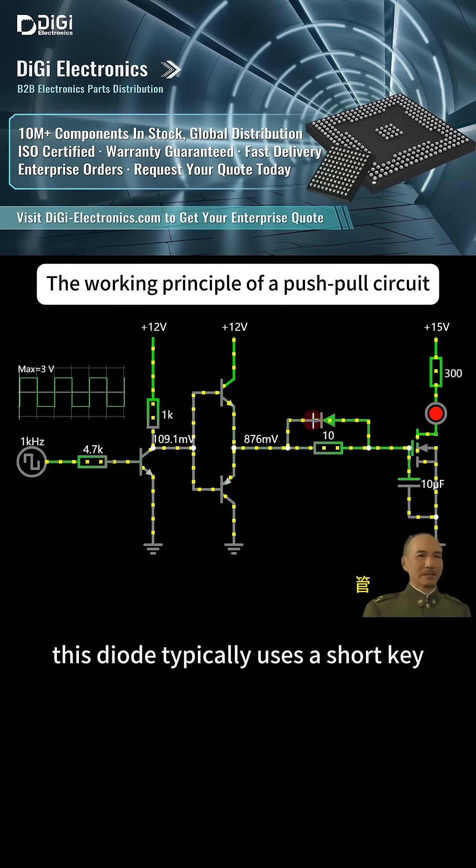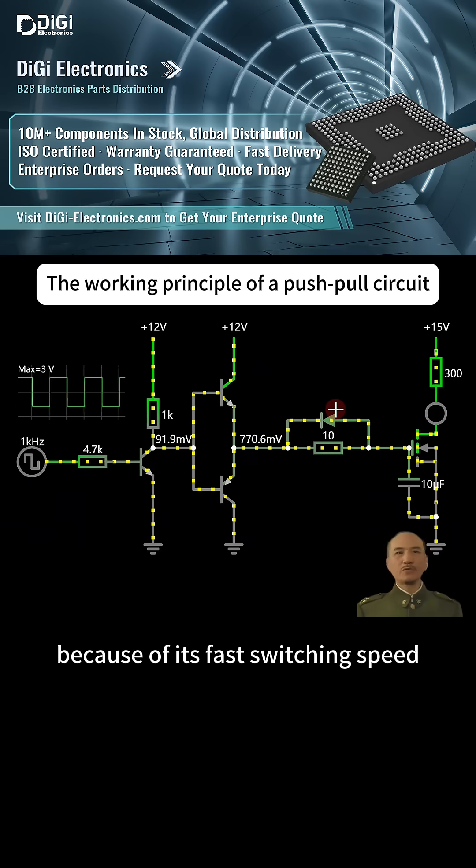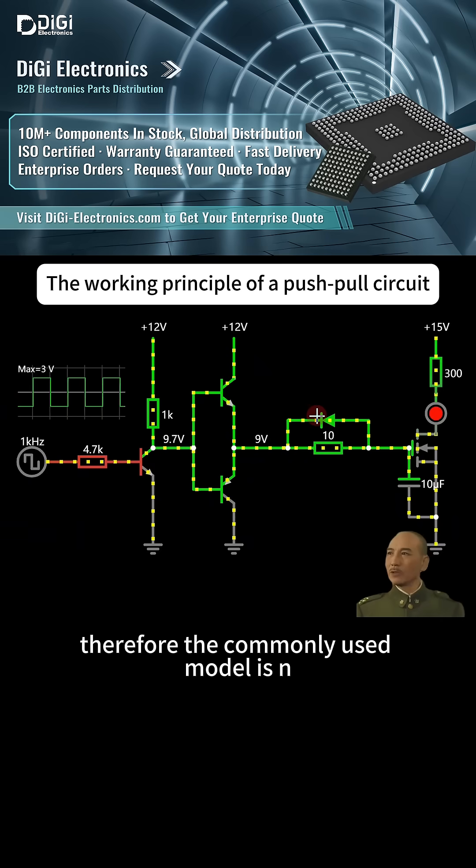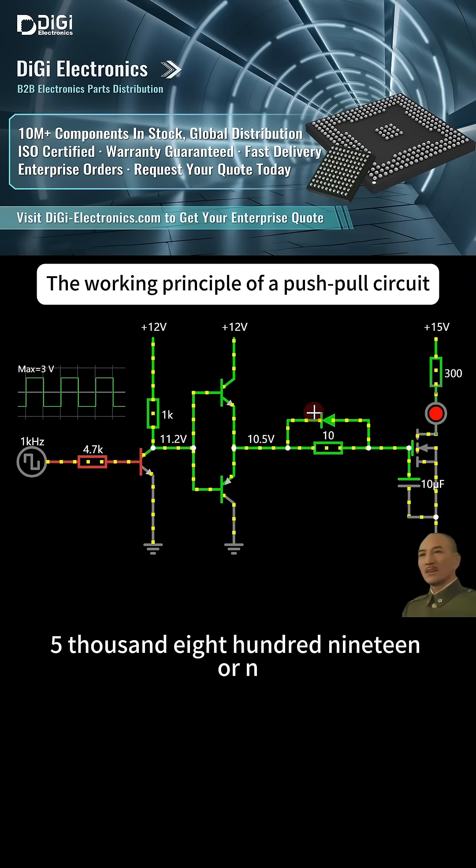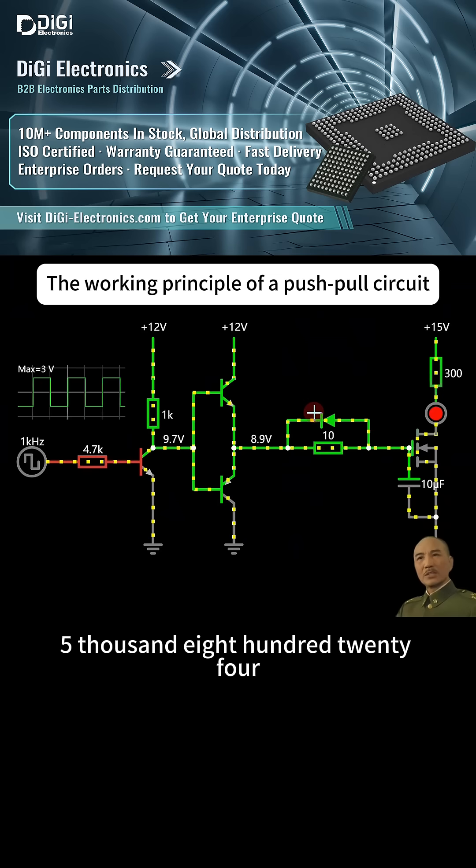This diode typically uses a Schottky diode because of its fast switching speed and low voltage drop. Therefore, the commonly used models are N5819 or N5824.